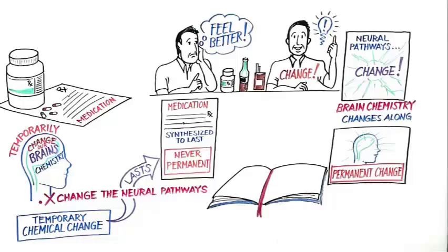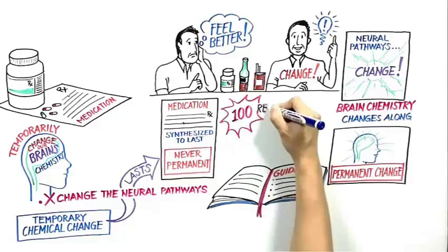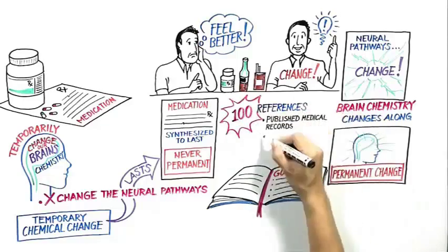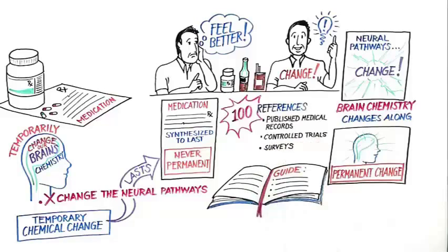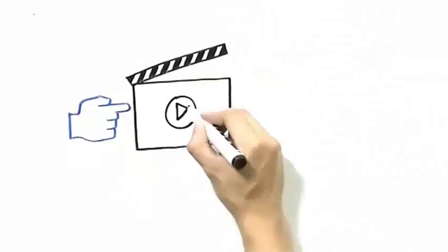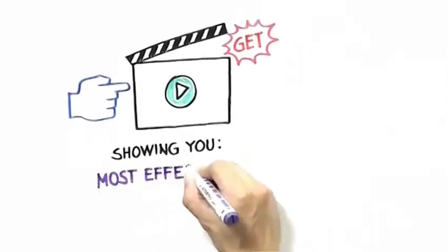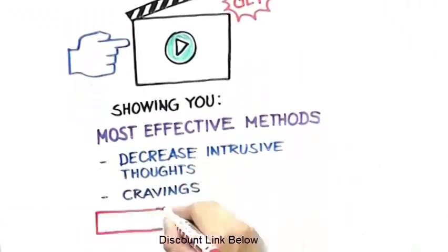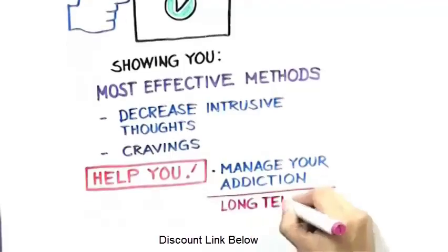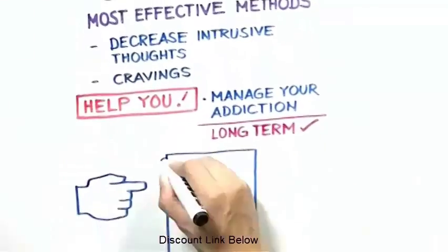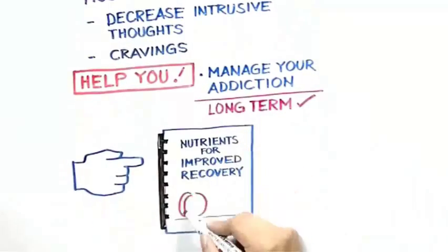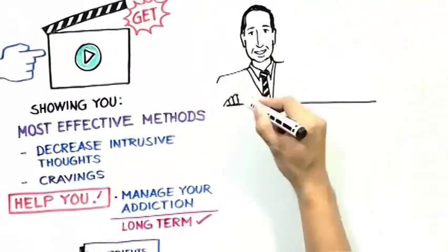There are over 100 supporting references found in this guide. Some references from published medical journals, controlled trials, and surveys. You'll also get your own videos showing you the most effective methods to decrease intrusive thoughts and cravings to help you manage your addictions long term. You'll also get a printable guide, Nutrients for Improved Recovery. Now listen to this.